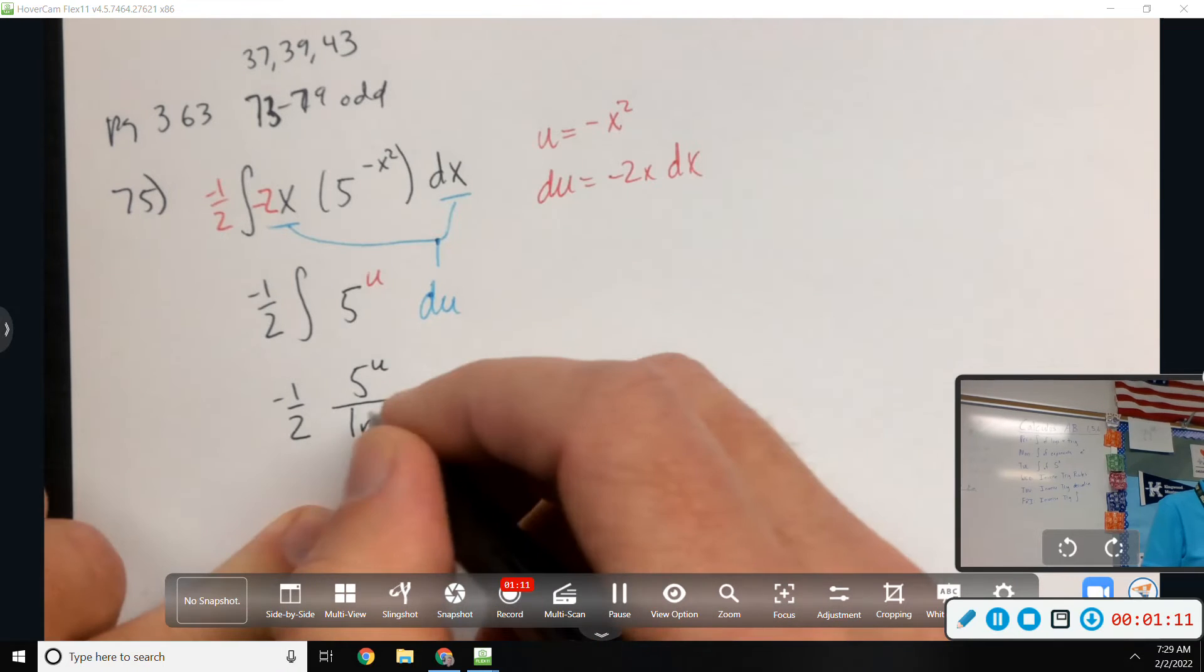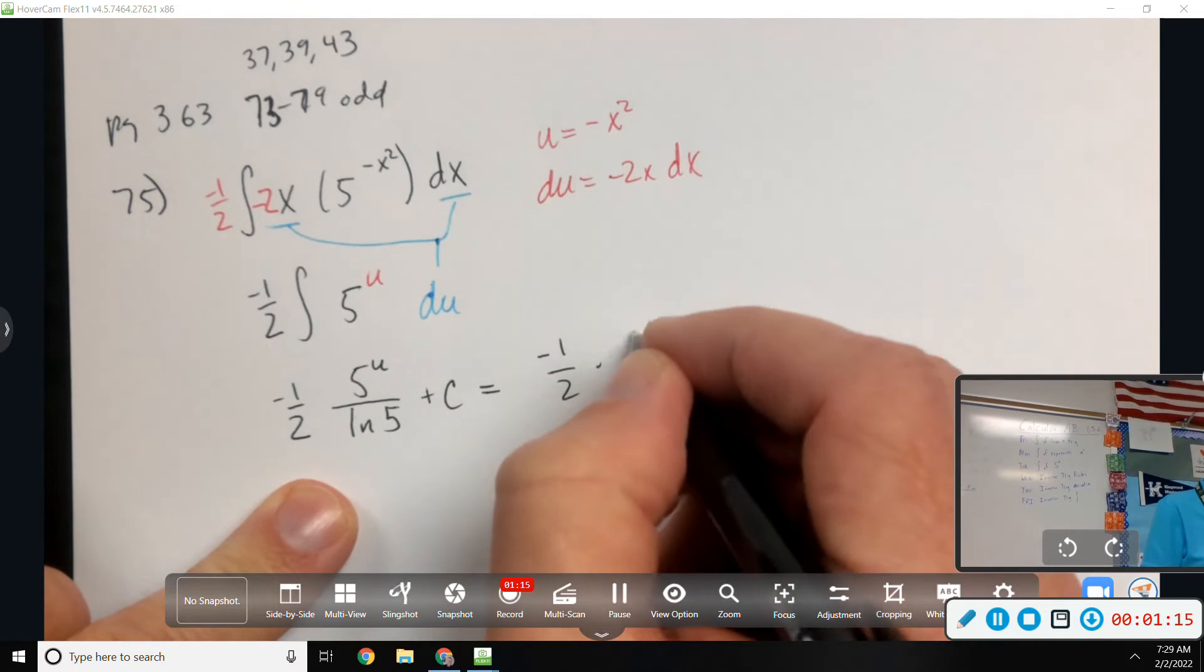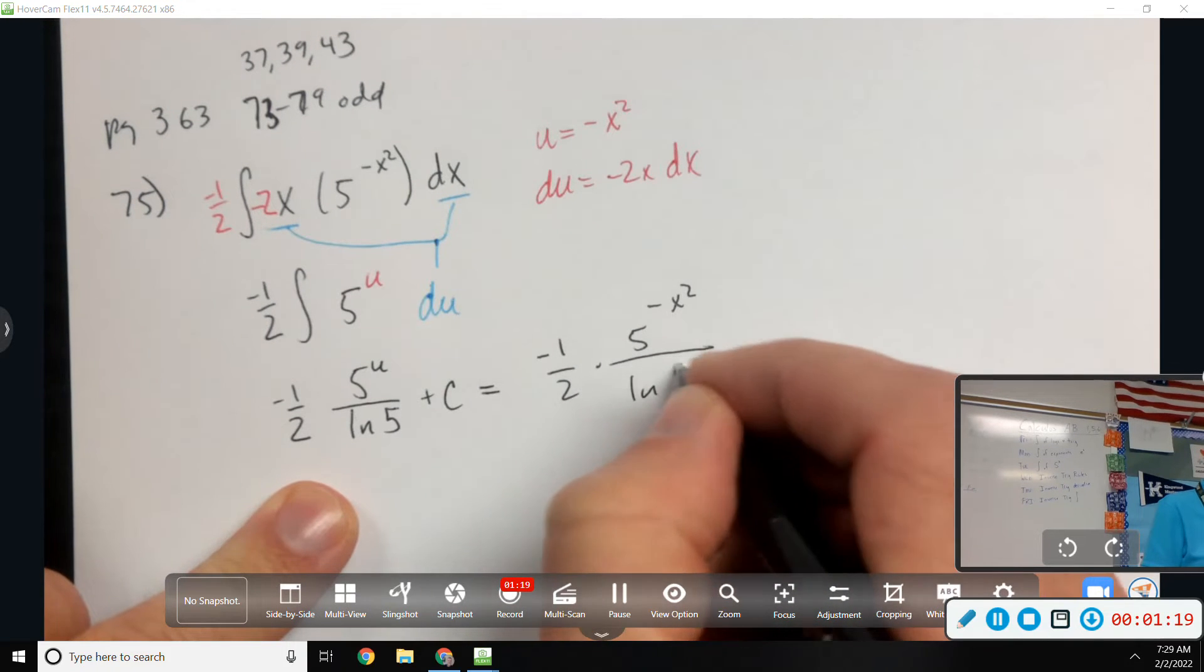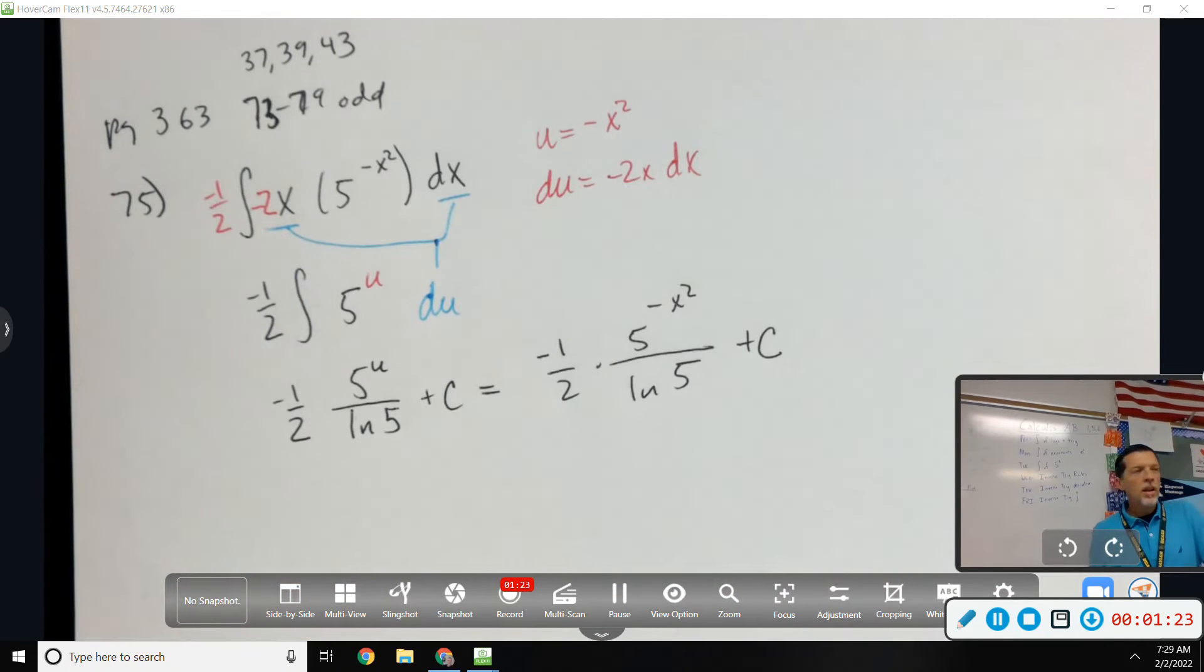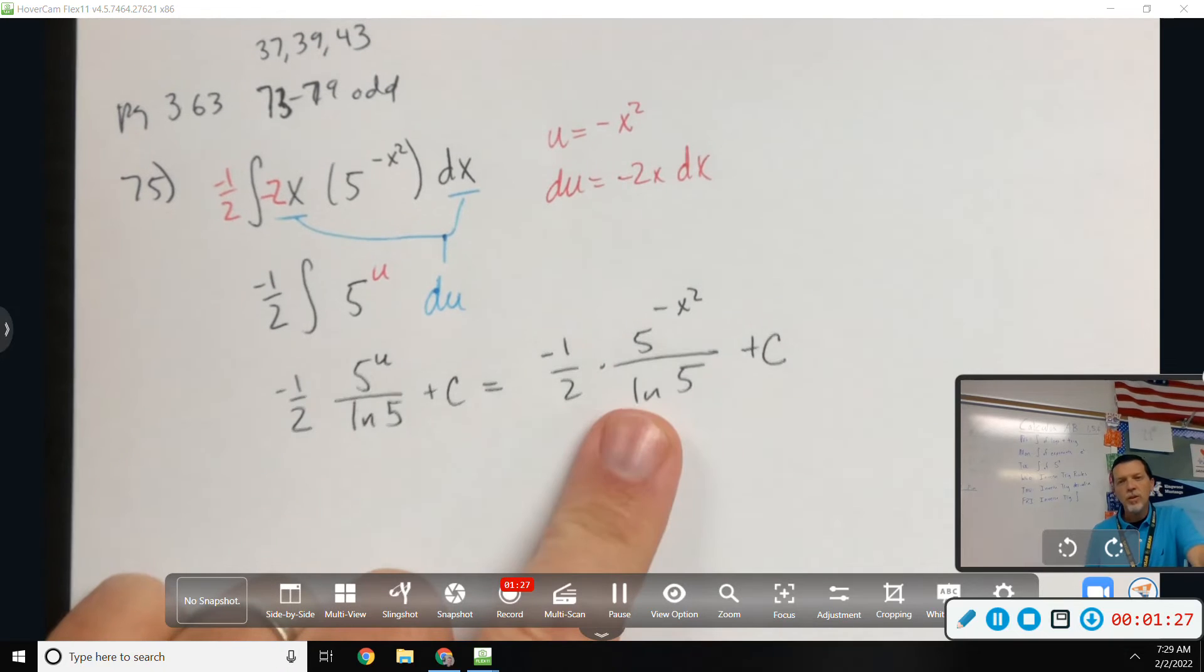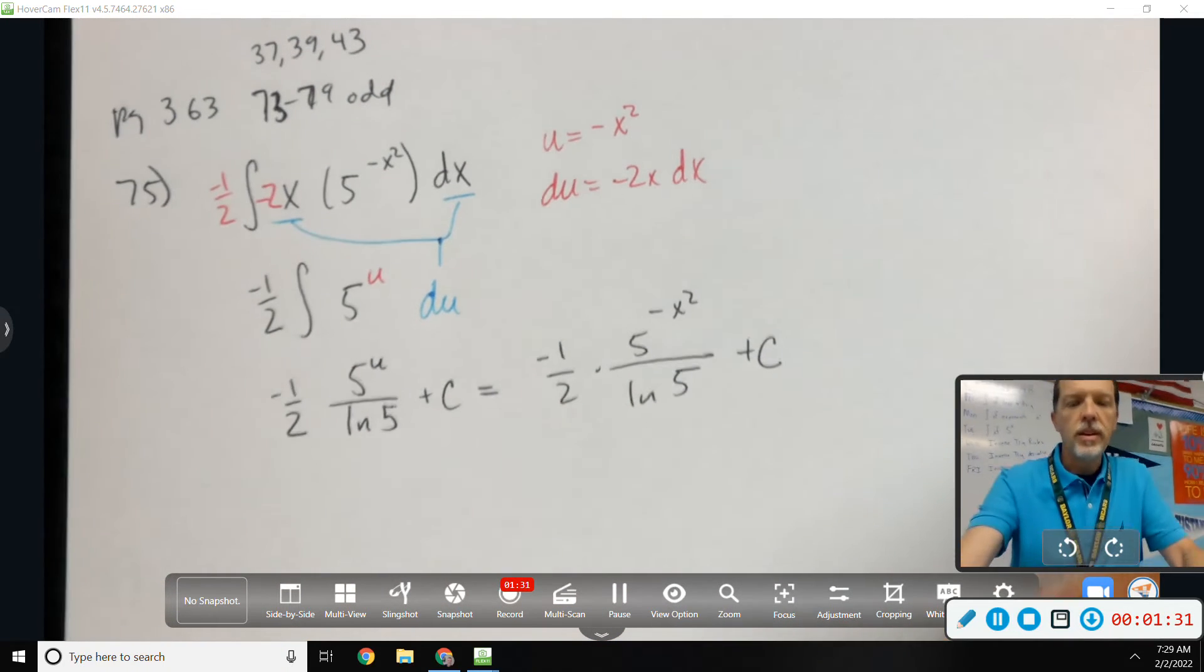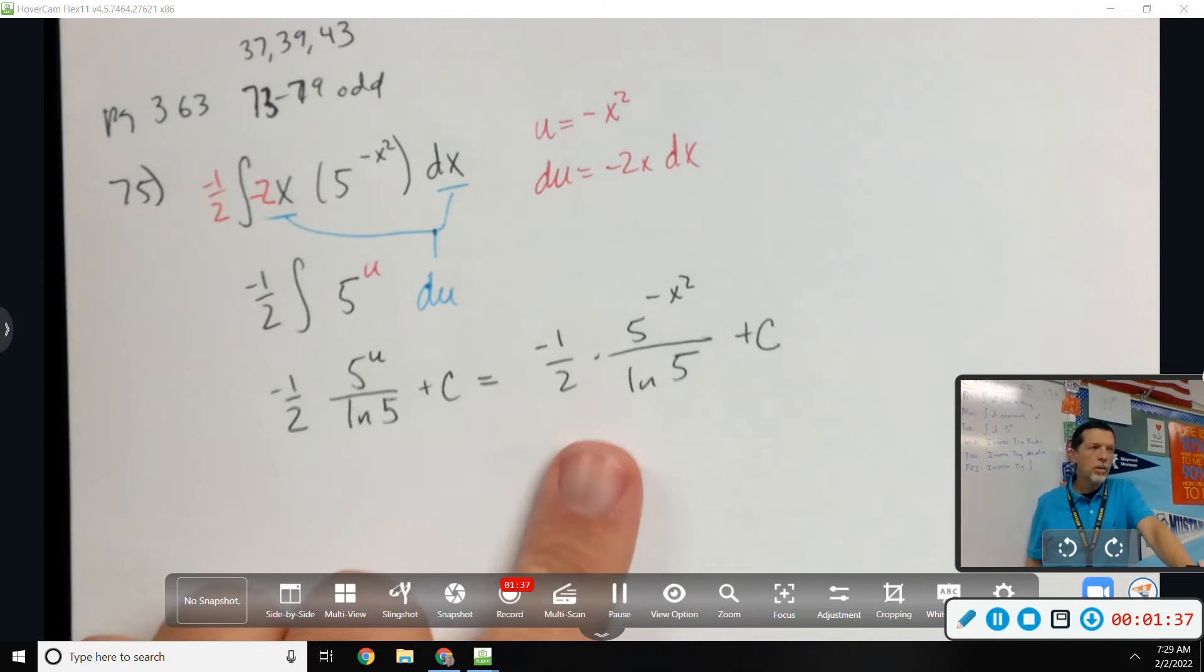Plus c, and I guess we need to put the u back in there. So negative 1 half, 5 to the negative x squared, divided by natural log of 5. Natural log has some of those weird properties, which means sometimes CalcChat gets a little creative with what they do with the answers, but we don't have to worry about that.